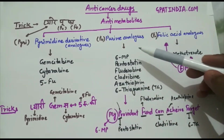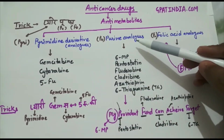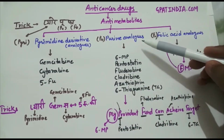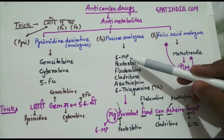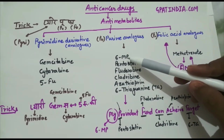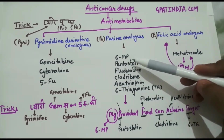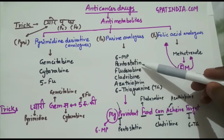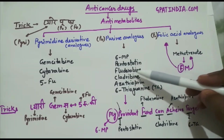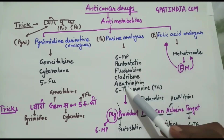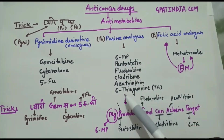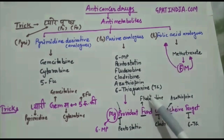The next category is purine analogs. Purine analogs include different drugs which are: 6-mercaptopurine, pentostatin, fludarabine, cladribine, azathioprine, and 6-thioguanine.